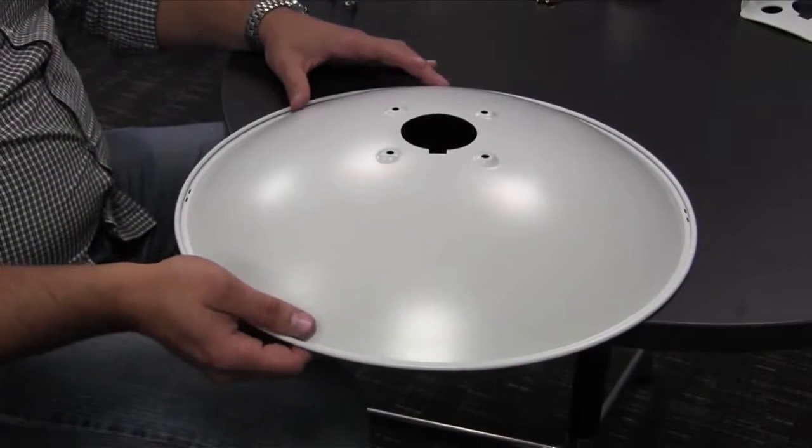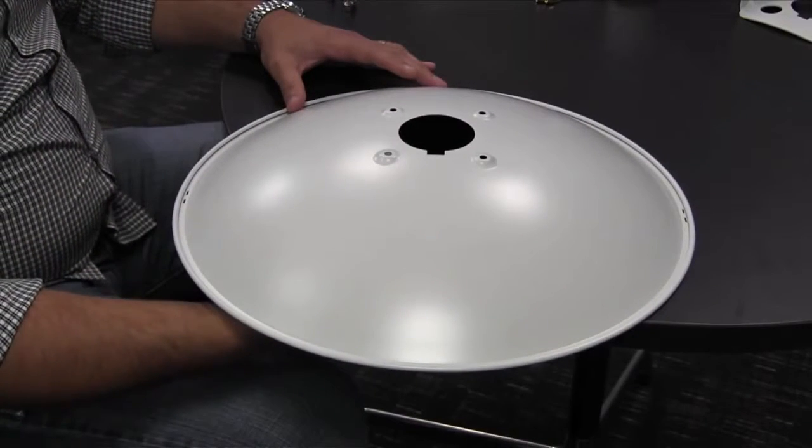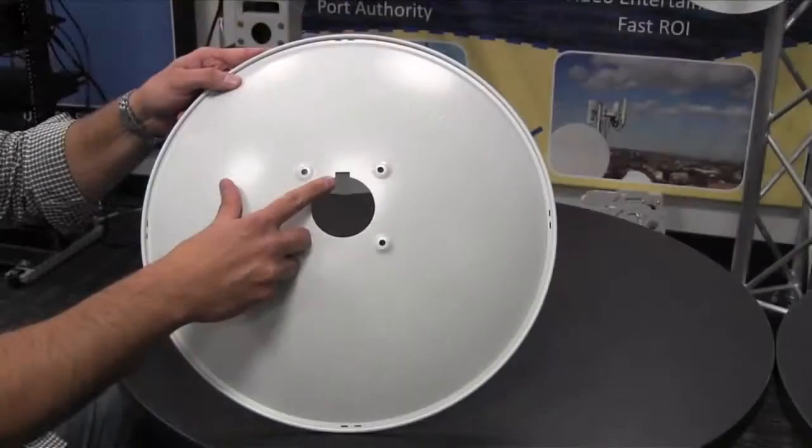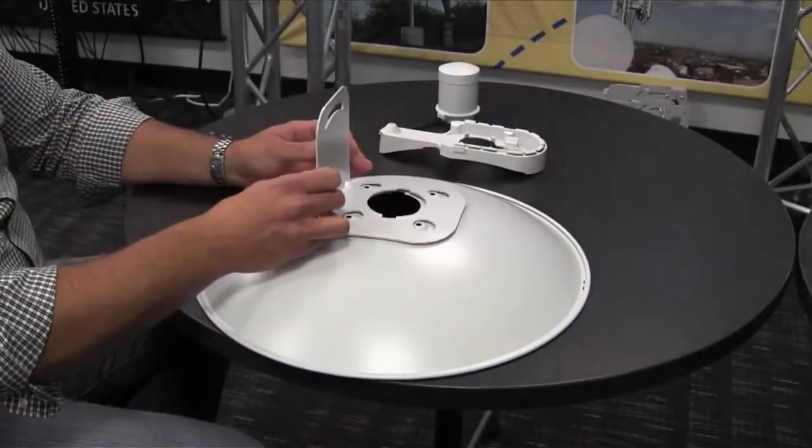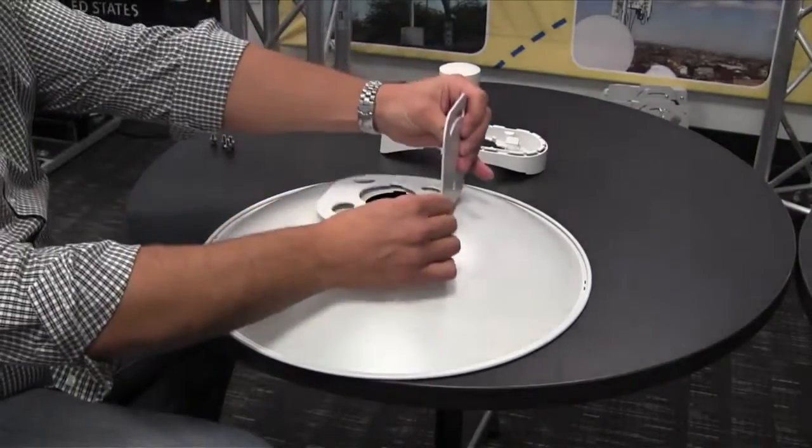Lay the dish on a flat table and have it overlapping so you can have access to the holes on the bottom. With this notch as your reference, position the mounting bracket for either left side or right side installation.